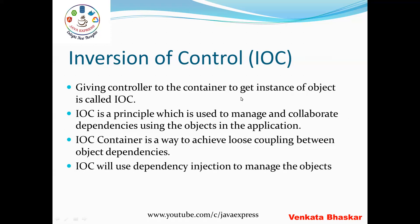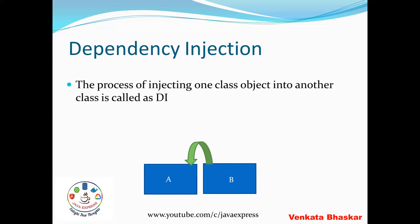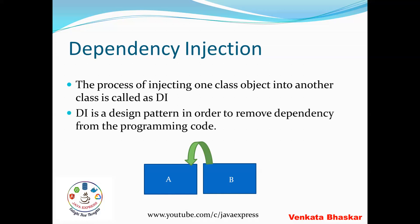Now, what is dependency injection? If you have class A and class B, and in class A you want to use class B as a dependency, this kind of dependency is taken care of by your IOC container via DI. The process of injecting one class object into another class is called dependency injection. It is a kind of design pattern where you can remove dependencies from the programming code. So now you should have a clear idea on IOC container, inversion of control, and dependency injection.